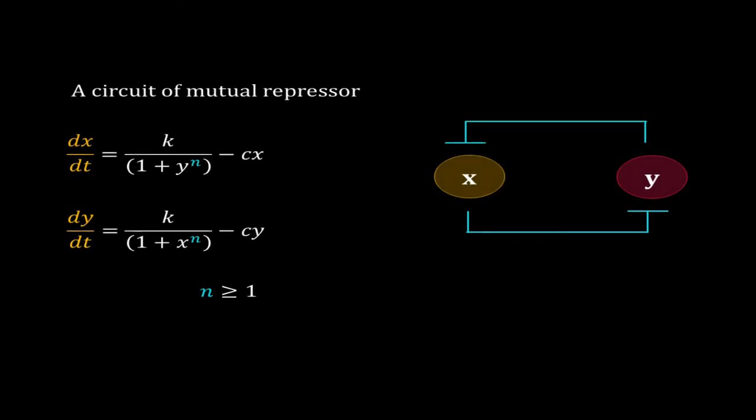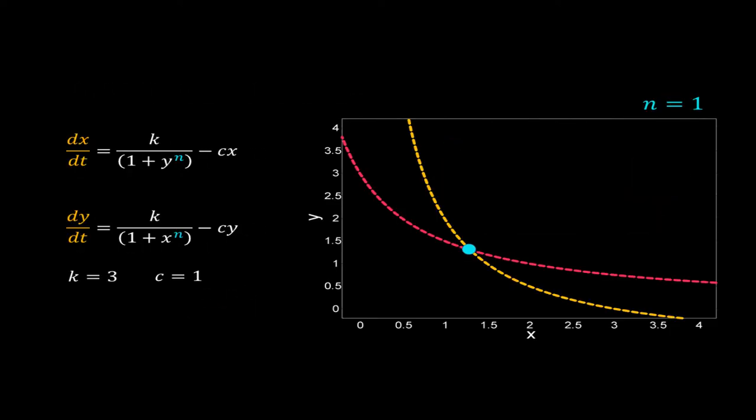Pitchfork bifurcation is also common in biology. I will explain that using a simple model — a simplified model for a mutual repressor circuit, where x represses the expression of y and y represses x. You can imagine x and y as two transcription factors. Both ODEs have a similar form, and in this model n is the control parameter. I will use nullclines and phase plane plots to detect bifurcation in this system.